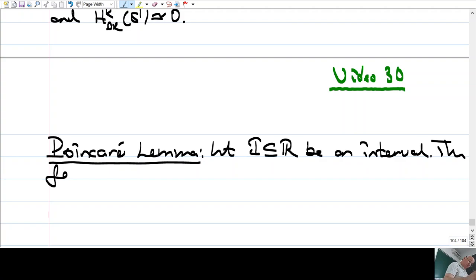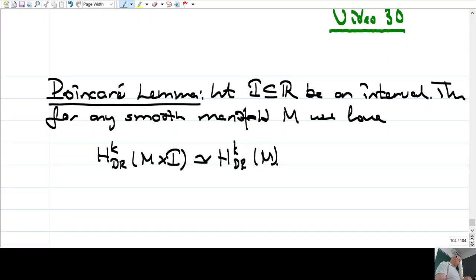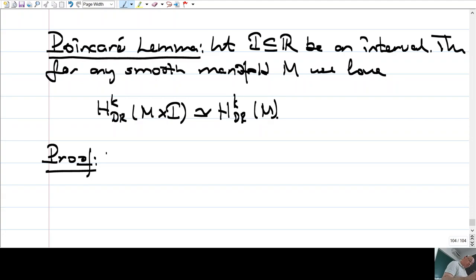Let I be an interval. Then, for any smooth manifold M, we have H^k de Rham cohomology of M cross I is isomorphic to H^k de Rham of M. In other words, if you multiply your manifold with an interval, then the cohomology doesn't change.